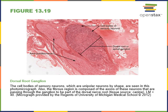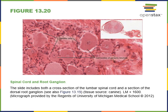A micrograph of the dorsal root ganglion shows numerous cell bodies of sensory neurons. Axons travel from the dorsal root to the dorsal root ganglion, and axons from the ventral root come together to join the dorsal root to form the trunk of a spinal nerve. At higher magnification, the cell bodies of pseudo-unipolar sensory neurons are visible, surrounded by neuroglial cells called satellite cells that help regulate the chemical environment surrounding the neurons.